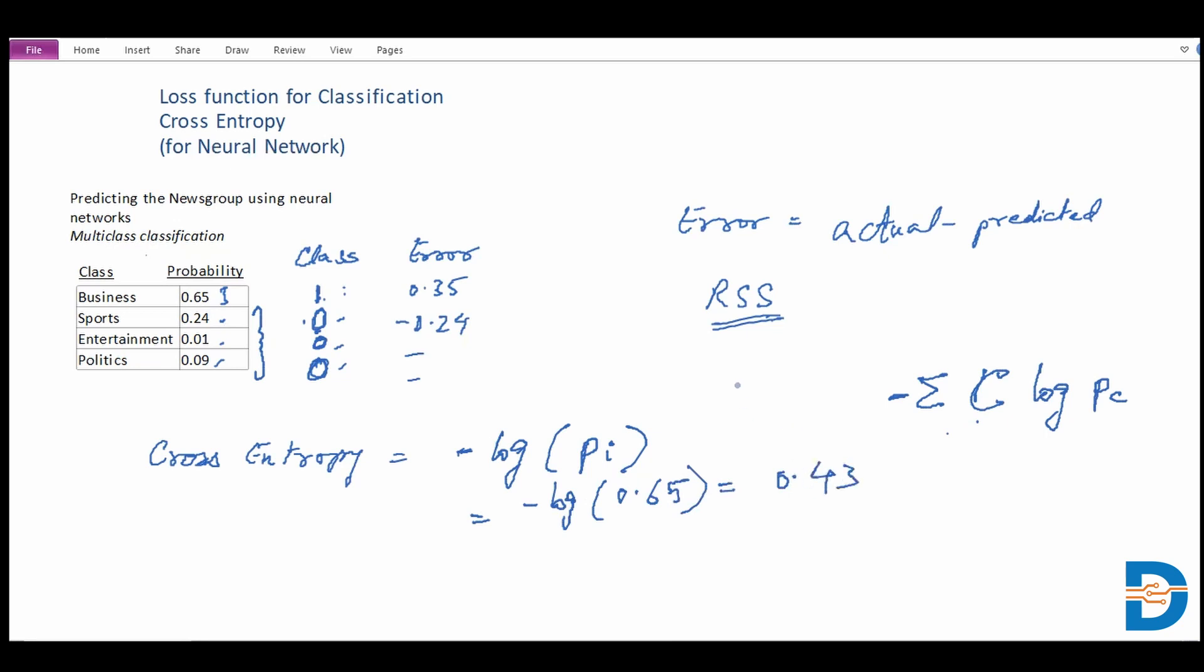So effectively this becomes our loss for a particular observation. We would be getting the total sum of the cross entropy for all our data that's being fed into the neural network, and that total cross entropy can be termed as a loss function L.